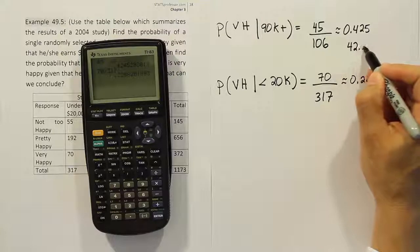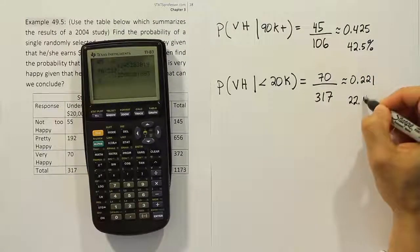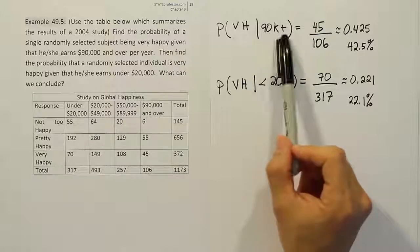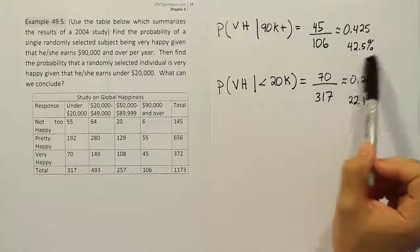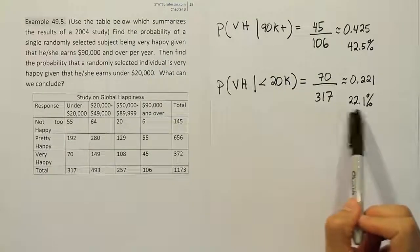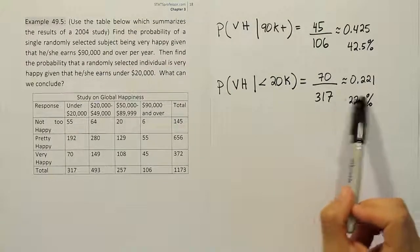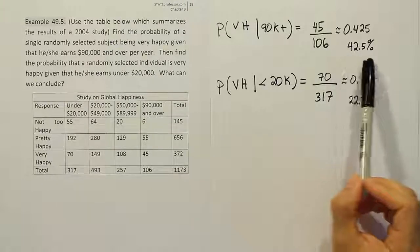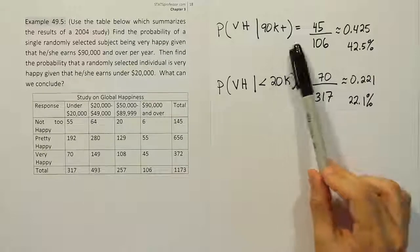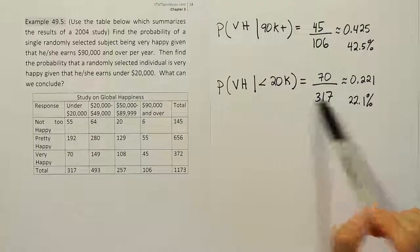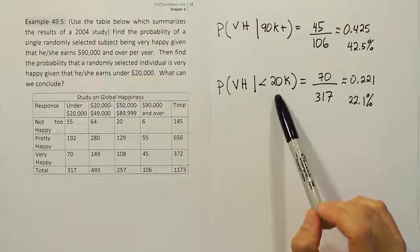So what can we conclude from that? Well, it looks like making $90,000 a year or more puts you more likely to be happy than if you're in the under $20,000 a year category because only 22% of those people surveyed reported being very happy. This number is quite larger than this one - it's almost twice as large. So it seems like you're almost twice as likely to be happy if you make a lot of money a year as opposed to making a little bit of money per year.